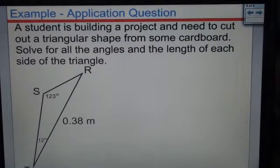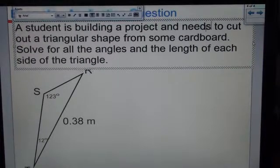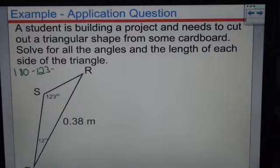And finally, we have a little application question. A student is building a project and needs to cut out a triangular shape from some cardboard. Solve for all the angles and the length of each side of the triangle. Well, we already know two angles here. We have 12 and 123, so we can find this angle by going 180 minus the other two, because we know all angles in a triangle must add up to 180. And we get this angle here, angle r equal to 45.